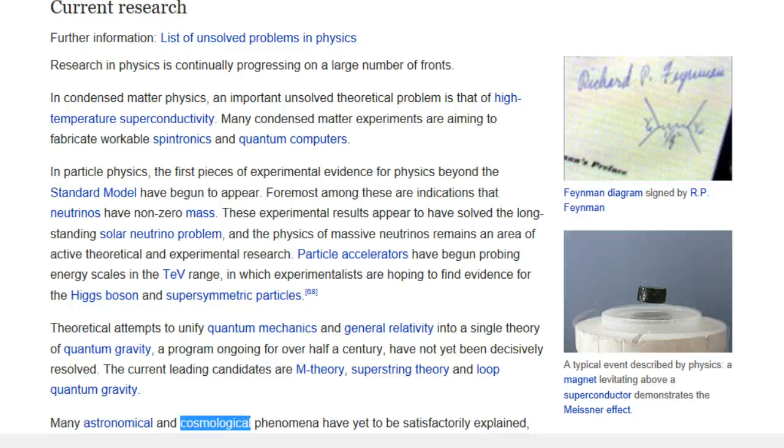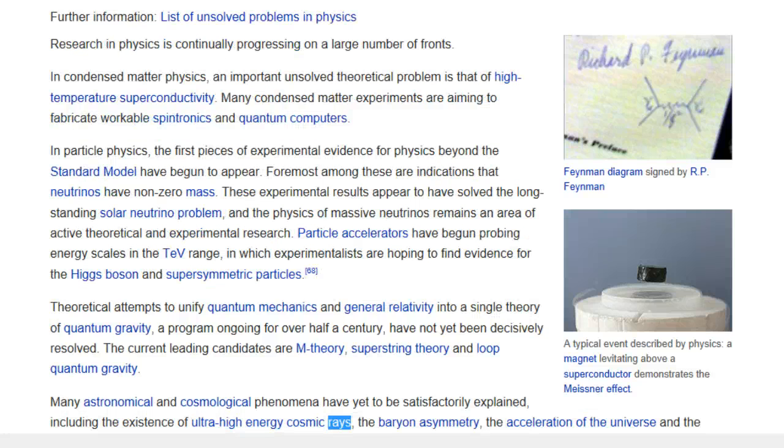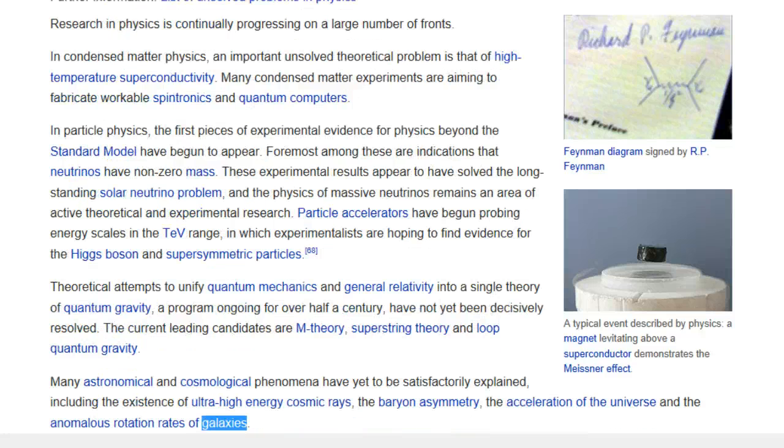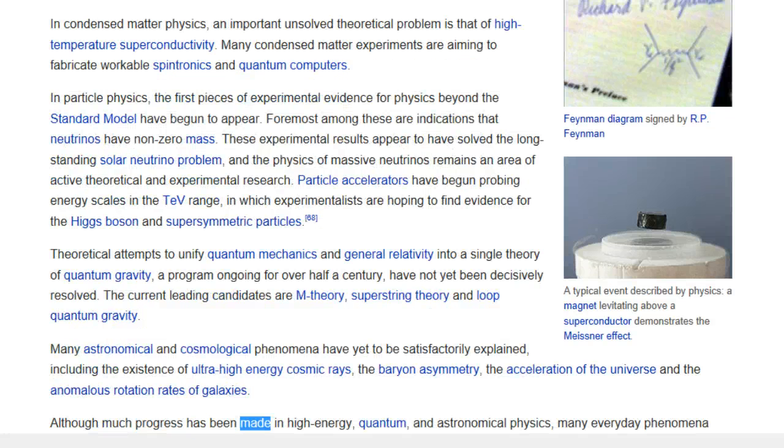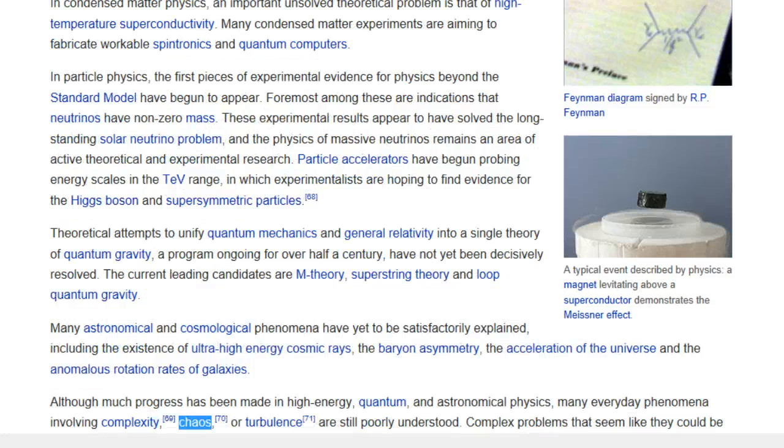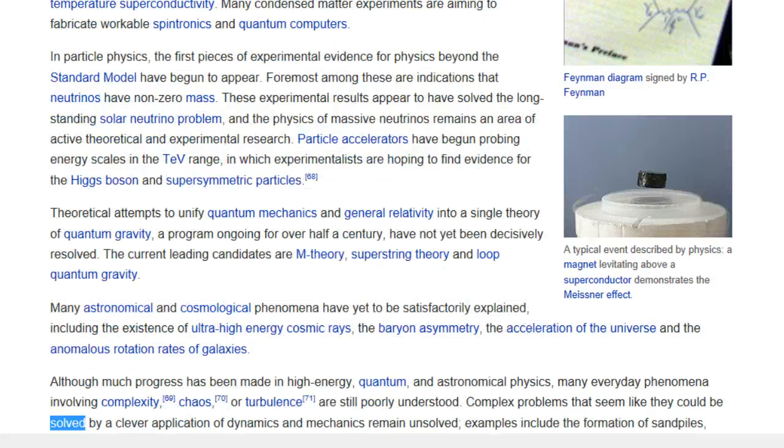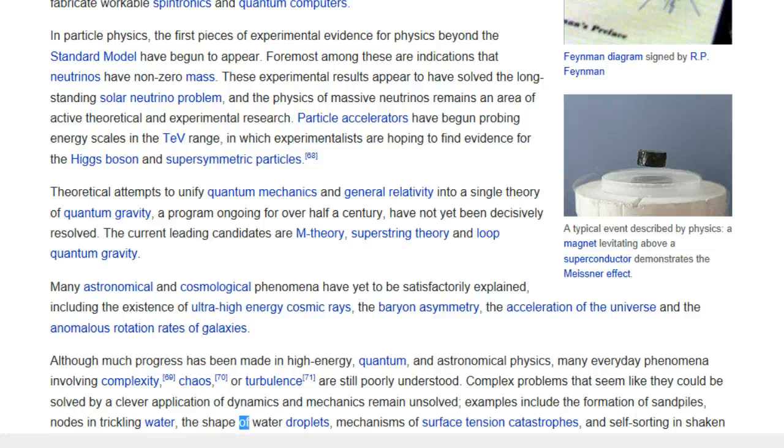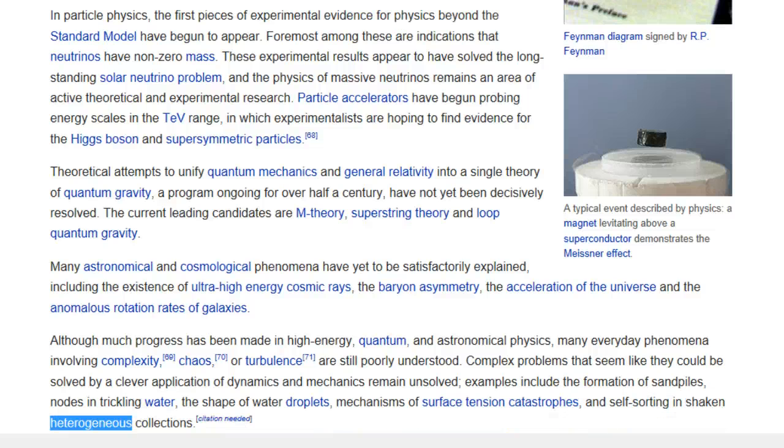Many astronomical and cosmological phenomena have yet to be satisfactorily explained, including the existence of ultra-high-energy cosmic rays, the baryon asymmetry, the acceleration of the universe and the anomalous rotation rates of galaxies. Although much progress has been made in high energy, quantum, and astronomical physics, many everyday phenomena involving complexity, chaos, or turbulence are still poorly understood. Complex problems that seem like they could be solved by a clever application of dynamics and mechanics remain unsolved. Examples include the formation of sand piles, nodes in trickling water, the shape of water droplets, mechanisms of surface tension catastrophes, and self-sorting in shaken heterogeneous collections.